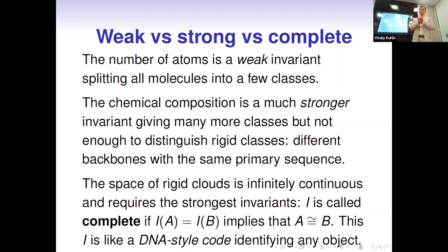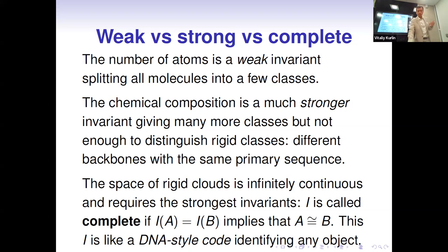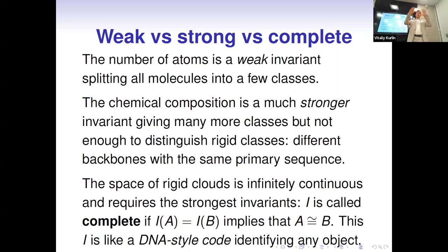Chemical composition is not sufficient either; Yuri showed specific examples where we have stereoisomers — molecules with the same composition but different geometric embeddings in three-dimensional space. So we are looking for strong invariants that distinguish all non-equivalent molecules. The problem is complicated: in simulations we have slight perturbations, and under a slight perturbation we get a different rigid class. Any small perturbation gives a different class, so we have an infinitely continuous space of rigid conformations — many classes and difficult to distinguish.